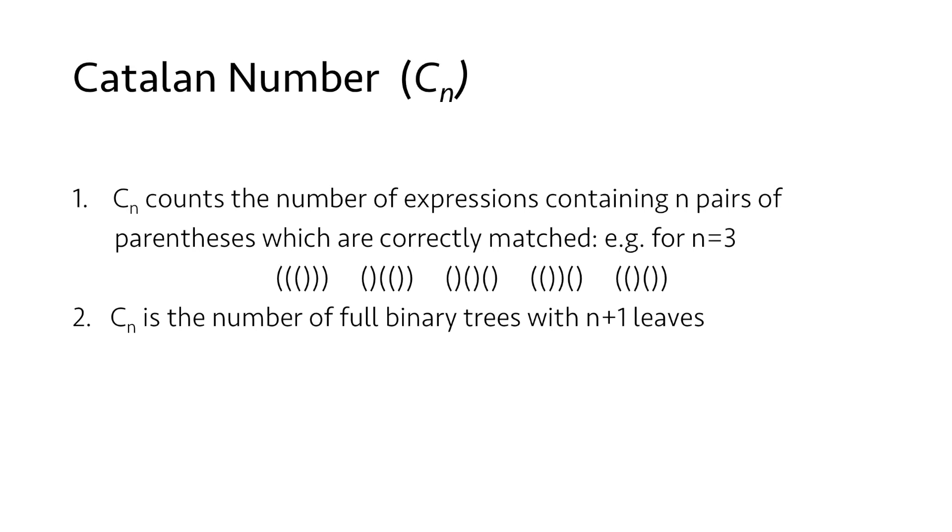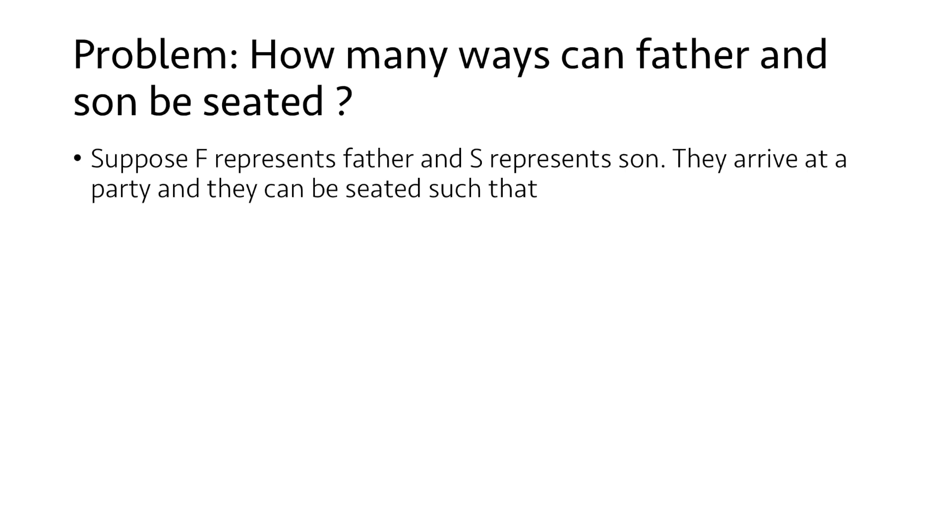Let's take an example to understand the use of Catalan number in a better way. Suppose F represents father and S represents son. They arrive at a party and they can be seated such that father and son sit together starting from the left with father sitting first.